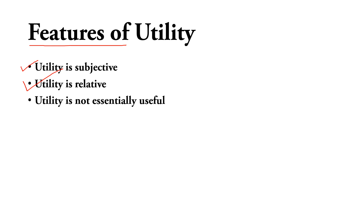The third point is: utility is not essentially useful. For example, an alcoholic person who drinks every day — drinking is not a good thing, but he gets satisfaction from it, which is why he drinks daily. The utility being obtained is not necessarily useful, because drinking obviously ruins life. So the utility he is getting from alcohol is not essentially useful.